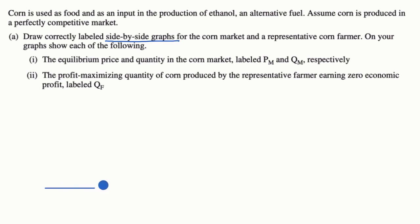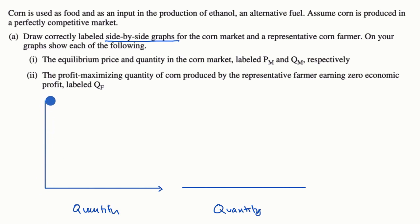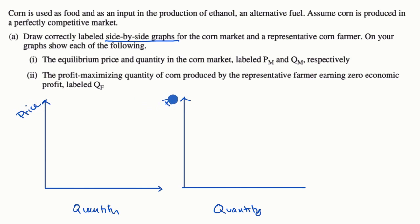This is going to be my horizontal axis for the market, and then this is going to be the horizontal axis for the farmer. This is going to be quantity in the market, and then this is going to be quantity for the farmer. This is going to be price in the market. And whatever the market price is, that's also going to be the price that the farmer has to take, because it's a perfectly competitive market — the farmer is going to be a price taker. So this is price on each axis.